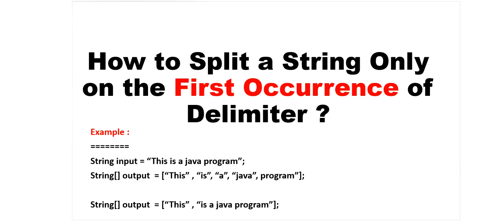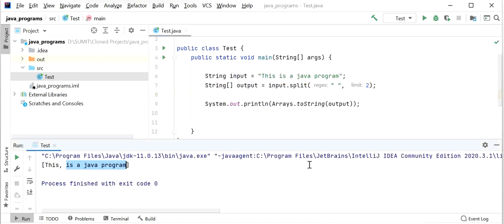We can do this using the second parameter of the split method, which is the limit. That's how we split a string based on the first occurrence of a delimiter. Thanks for watching this video.